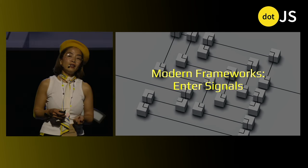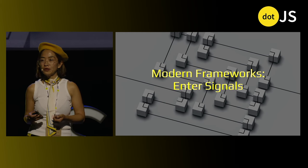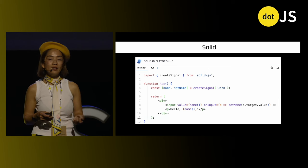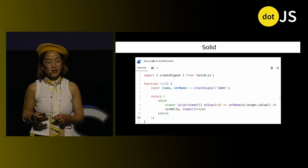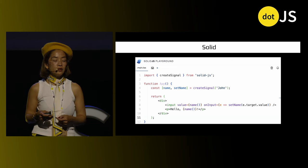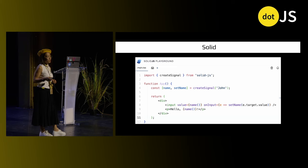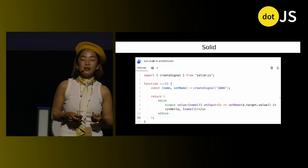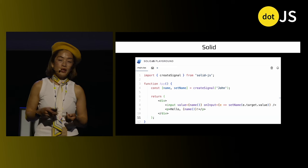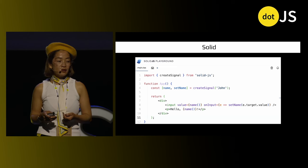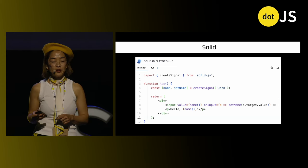But what exactly are signals, and why are they so powerful? In SolidJS, a signal is a simple way to create a reactive state. Think of it as a special kind of variable that automatically updates any part of the application that depends on it. In this example, createSignal is used to create a reactive state variable. When the name signal changes, the input and the paragraph automatically update, ensuring our UI is always in sync with our state.